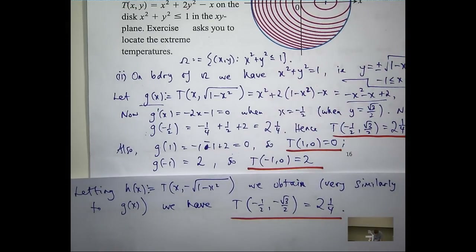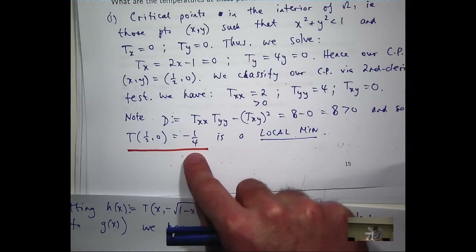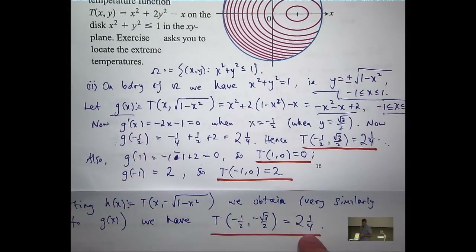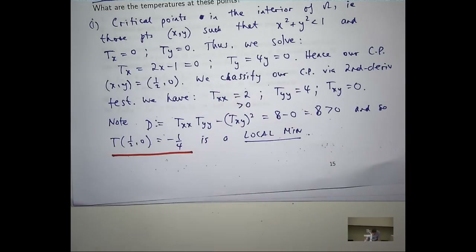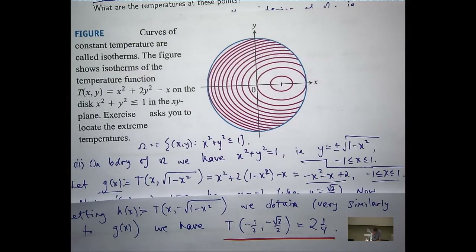We've got a lot of information. What we would do now is compare all of our values. The temperature at the local minimum was minus one quarter. From the boundary analysis, our values were two and one quarter, zero, and two — and two and one quarter again from the bottom arc. We pick the maximum value and the minimum value out of that list. The minimum value is going to be minus one quarter — that's the lowest temperature inside the plate.